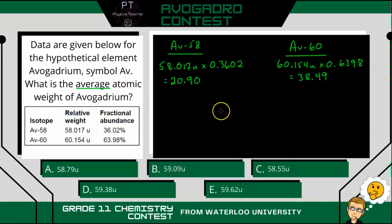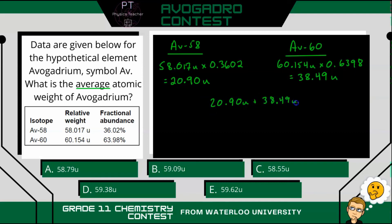To find the average atomic weight of Avogadrium, we simply add these two contributions. 20.90u plus 38.49u gives us the correct average, which is 59.39u — that would be answer D. I'm only off by 0.01 because I rounded these two values, but this would be our closest answer.